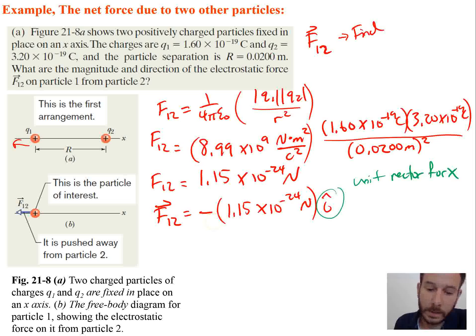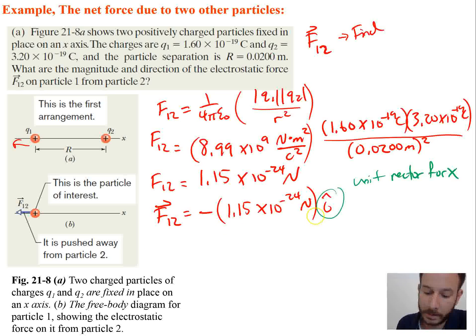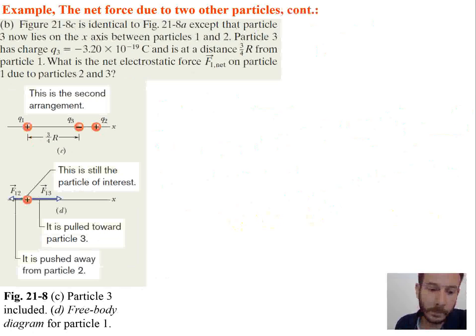Did we answer the question? We needed the magnitude and direction of the electrostatic force on particle 1 from particle 2. We've given the direction as negative x and the magnitude as 1.15 times 10 to the negative 24 newtons.